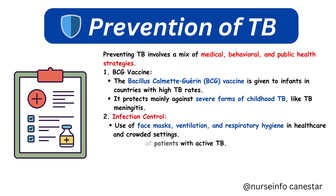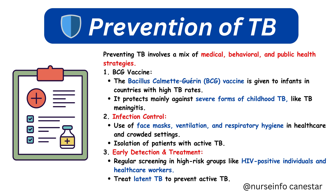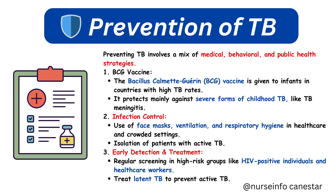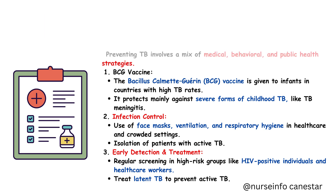Preventing TB involves a mix of medical, behavioral, and public health strategies. 1. BCG vaccine — the Bacillus Calmette-Guérin (BCG) vaccine is given to infants in countries with high TB rates, and protects mainly against severe forms of childhood TB like TB meningitis. 2. Infection control — use of face masks, ventilation, and respiratory hygiene in healthcare and crowded settings, and isolation of patients with active TB. 3. Early detection and treatment — regular screening in high-risk groups like HIV-positive individuals and healthcare workers, and treating latent TB to prevent active TB.